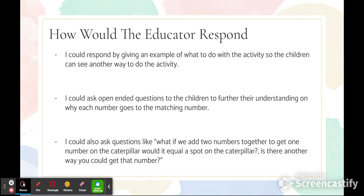You could also ask questions like: 'What if we add two numbers together to get one number on the caterpillar? Would it equal a spot on the caterpillar? Is there another way we could get that number?' This furthers the child's knowledge about whether one number just has to be on that spot, or if we could put two numbers together on one spot.